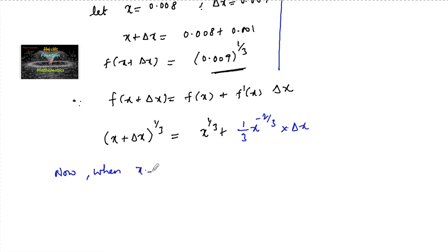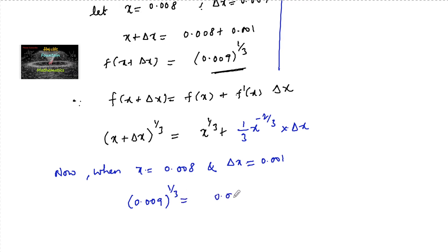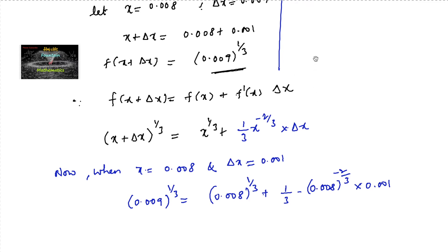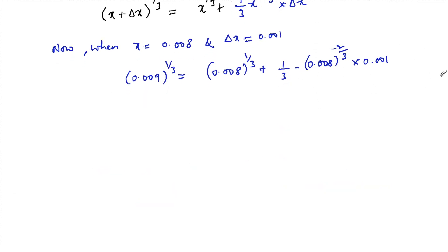When x = 0.008 and δx = 0.001, we get (0.009)^(1/3) = (0.008)^(1/3) + (1/3)(0.008)^(-2/3) · 0.001. Simplifying: (0.008)^(1/3) = 0.2, and (0.008)^(-2/3) = (0.2)^(-2) = 1/0.04. So the expression becomes 0.2 + (1/3)(0.2)^(-2) · 0.001.